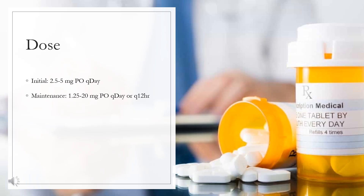Dose — Type 2 diabetes mellitus. Regular tablets: Initial dose 2.5–5 mg PO once daily. Maintenance dose 1.25–20 mg PO once daily or every 12 hours. Not to exceed 20 mg per day. Consider administering every 12 hours for doses greater than 10 mg per day.